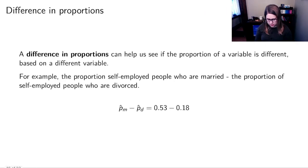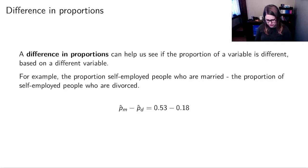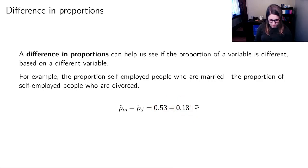Another type of summary statistic we sometimes use with two categorical variables is a difference in proportions. This is a way to see if the proportion of a variable differs based on another variable. For example, the proportion of self-employed people who are married minus the proportion of self-employed people who are divorced — 0.53 minus 0.18 — gives a difference of 0.35.